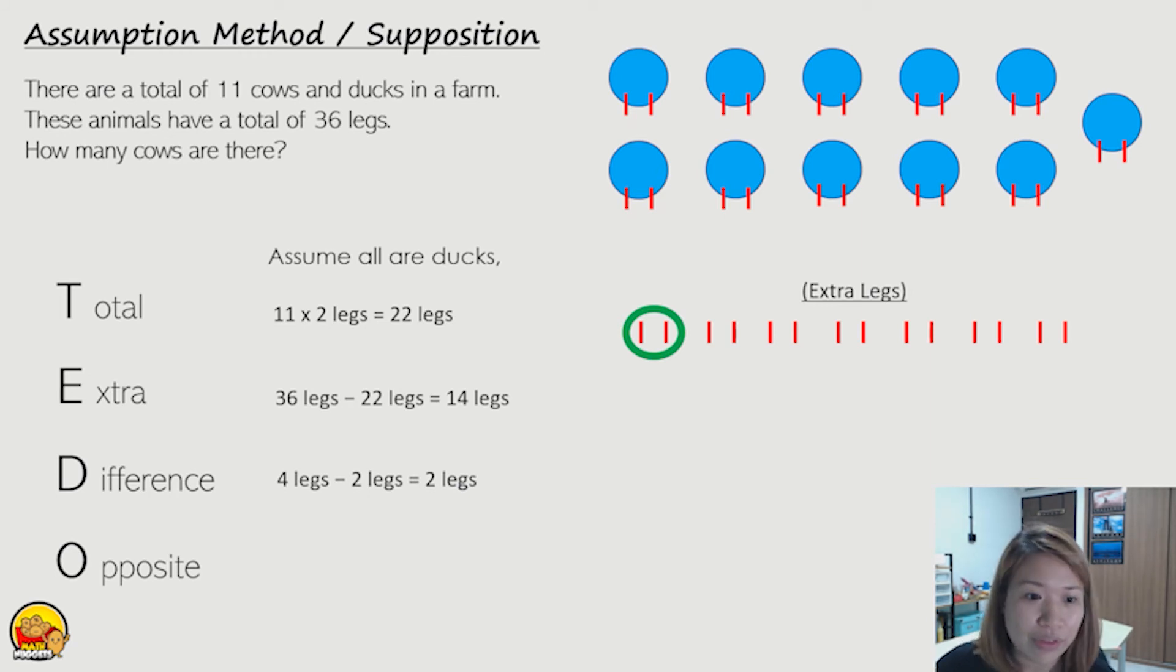What I'm going to do is to take out two legs from the extra legs and give it to the duck to make it a cow. I know it sounds weird, but I redistribute that two legs. Become four legs, right? So now the first one becomes a cow. Okay. So what I'm going to have to do is to redistribute all the extra legs in groups of two.